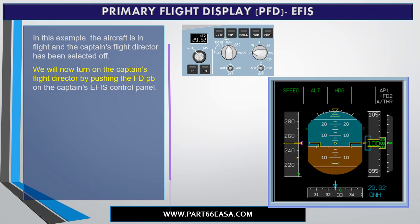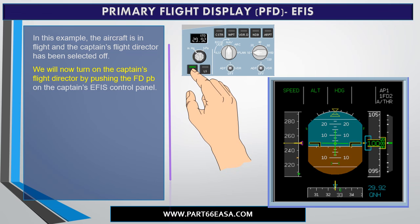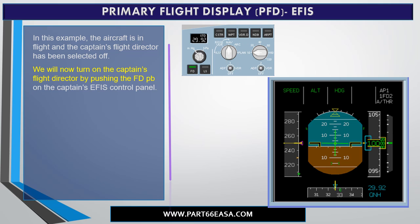The flight director bars themselves do not appear until takeoff. In this example, the aircraft is in flight and the captain's flight director has been selected off. We will now turn on the captain's flight director by pushing the flight director push button on the captain's EFIS control panel. Notice that the flight director is displayed in the form of vertical and lateral guidance bars. More information about the flight directors will be presented in the procedures training portion of this course.